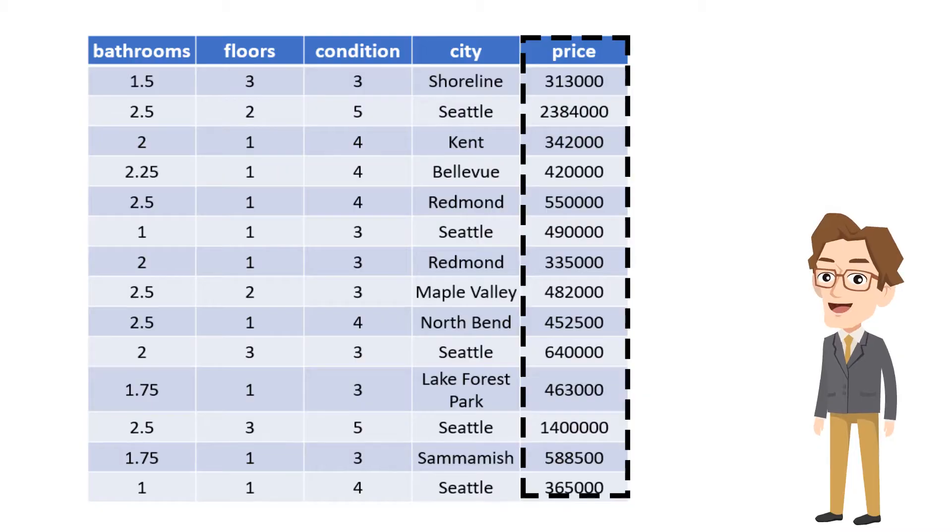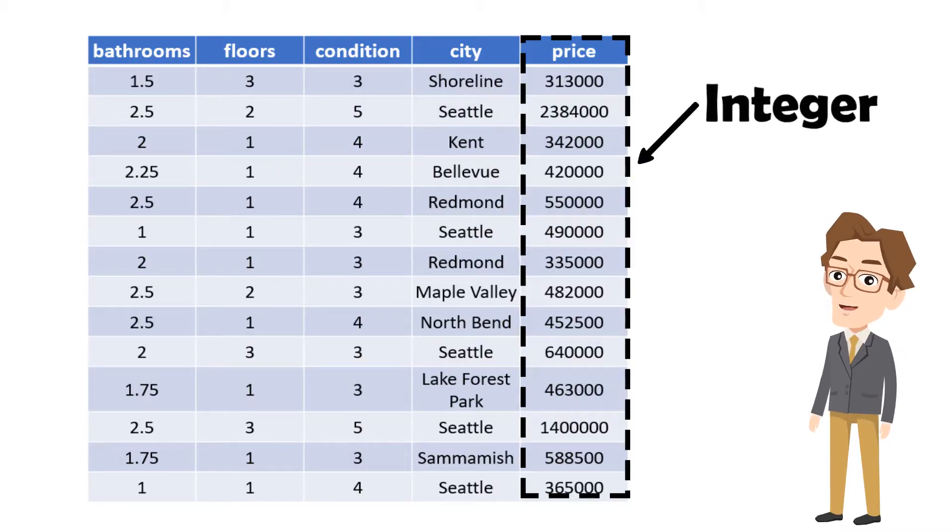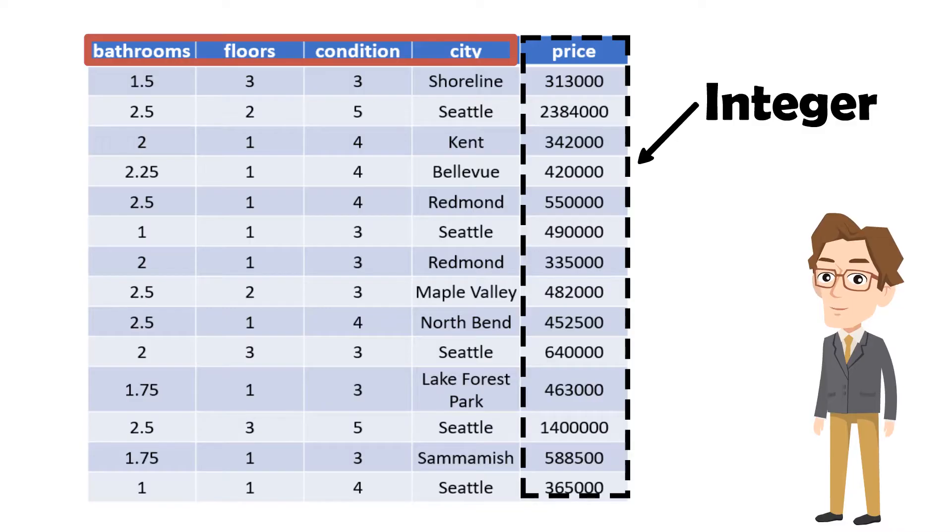In this example, target value of house price is an integer value that depends on bedrooms in house, floors, condition and location. Our model will predict an integer value of house price by using these features.